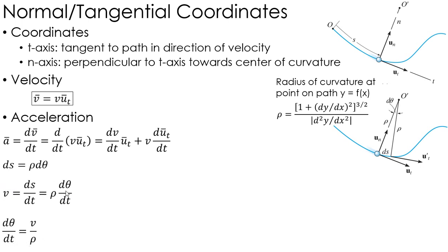So, rearranging a little bit, I can get d theta/dt equal to the velocity divided by the radius of curvature. So again, the change in angle as a function of time is defined as the velocity divided by the radius of curvature.